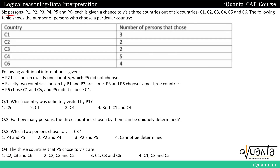The question is: 6 persons P1, P2, P3, P4, P5 and P6 are each given a chance to visit 3 countries out of 6 countries C1, C2, C3, C4, C5 and C6. The following table shows the number of persons who choose a particular country. C1 is visited by 3 people, C2 by 2 people, and so on similarly till C6.